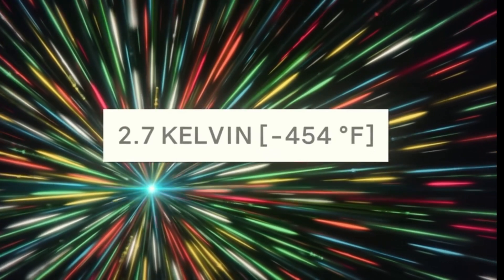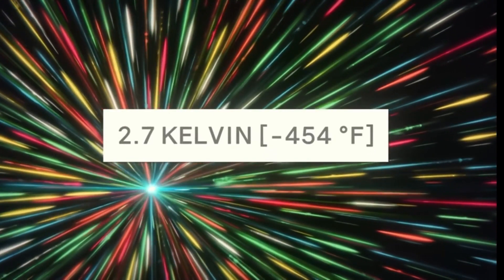We know this because of relic radiation that emerged after the Big Bang. This is called cosmic microwave radiation, which permeates space in all directions. Its approximate temperature is 2.7 Kelvin, but in some regions it can be colder.